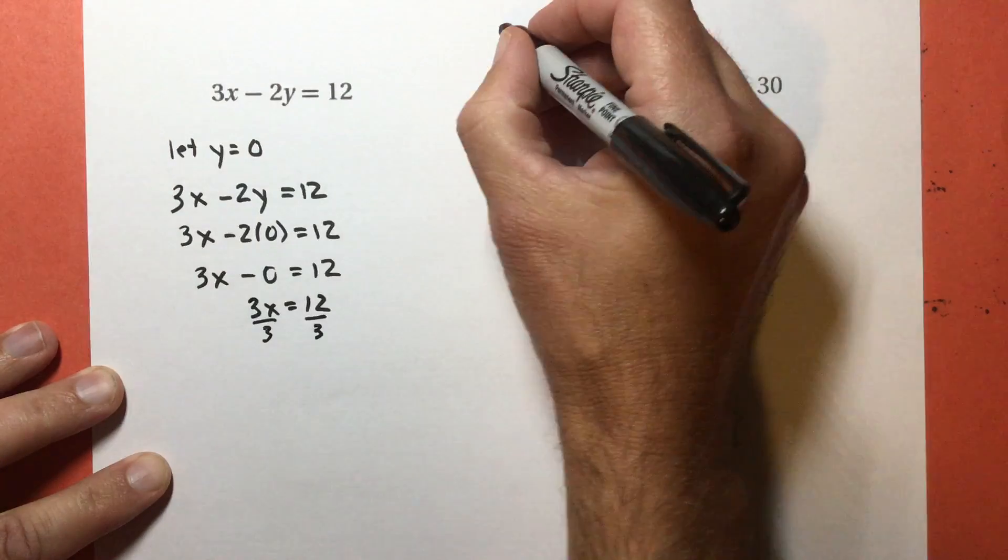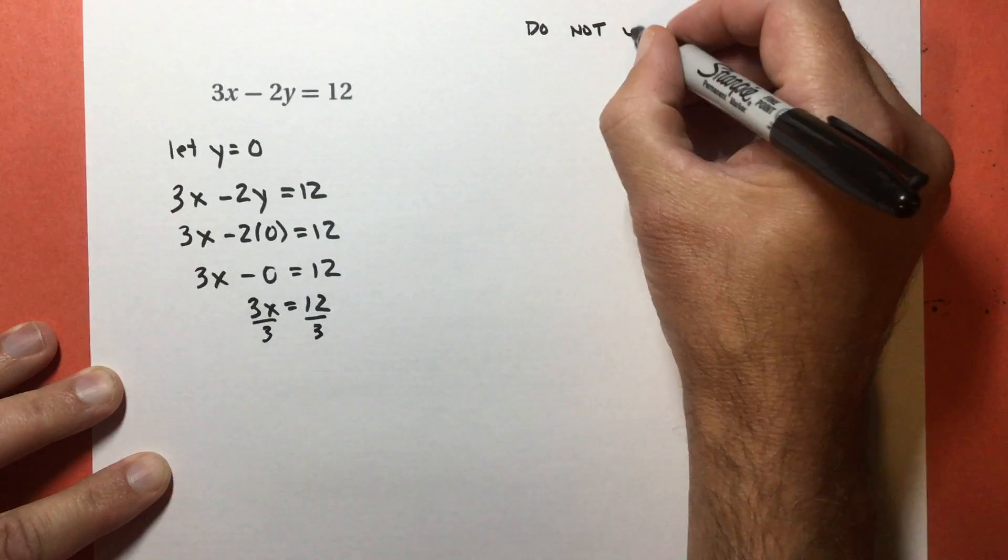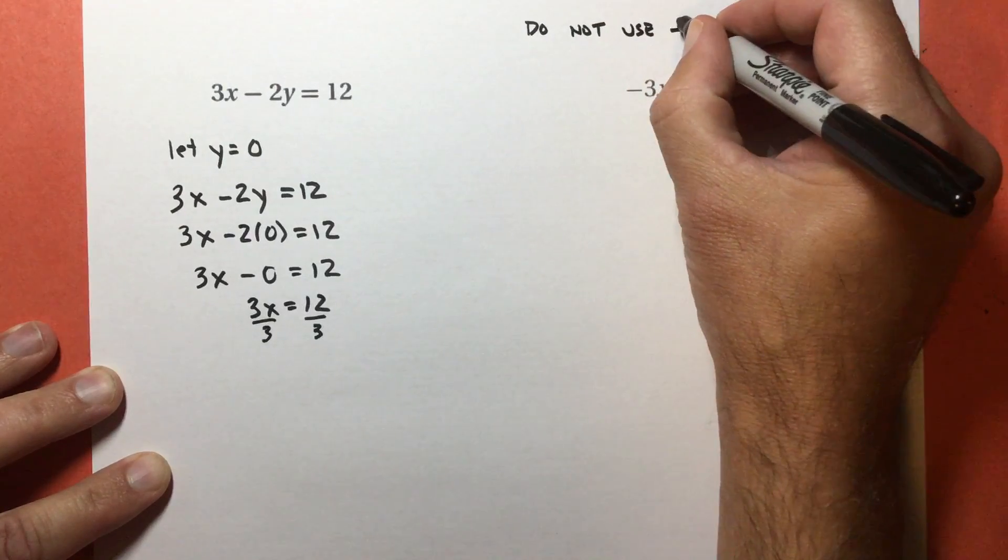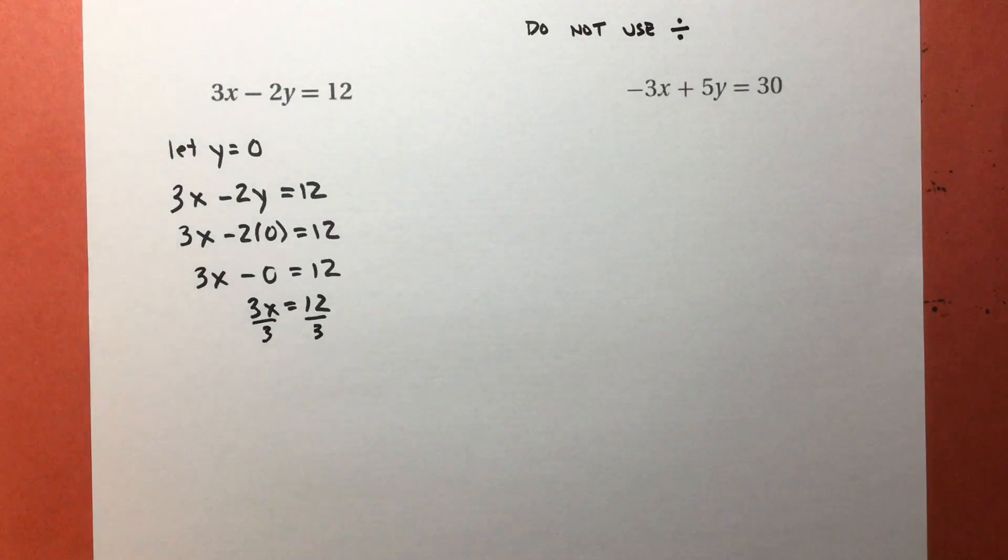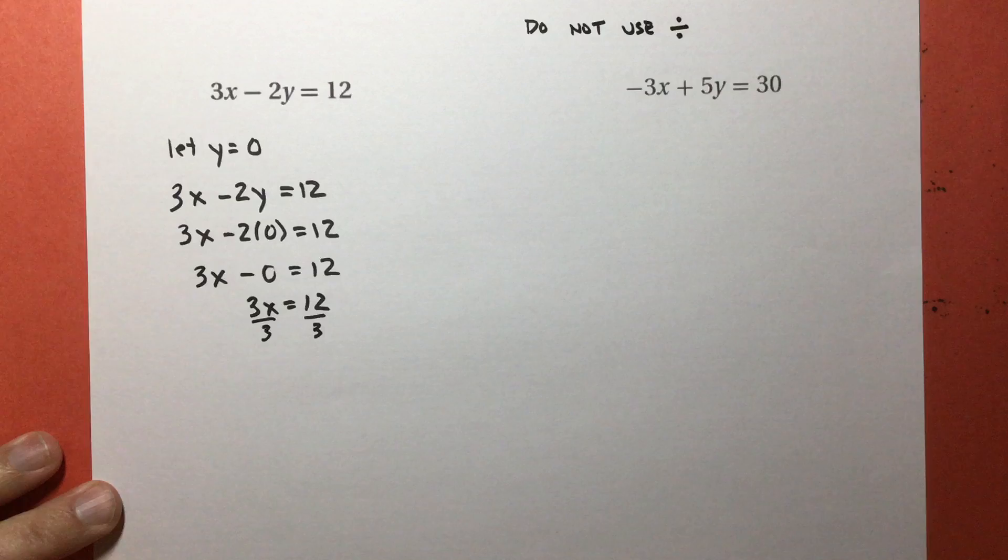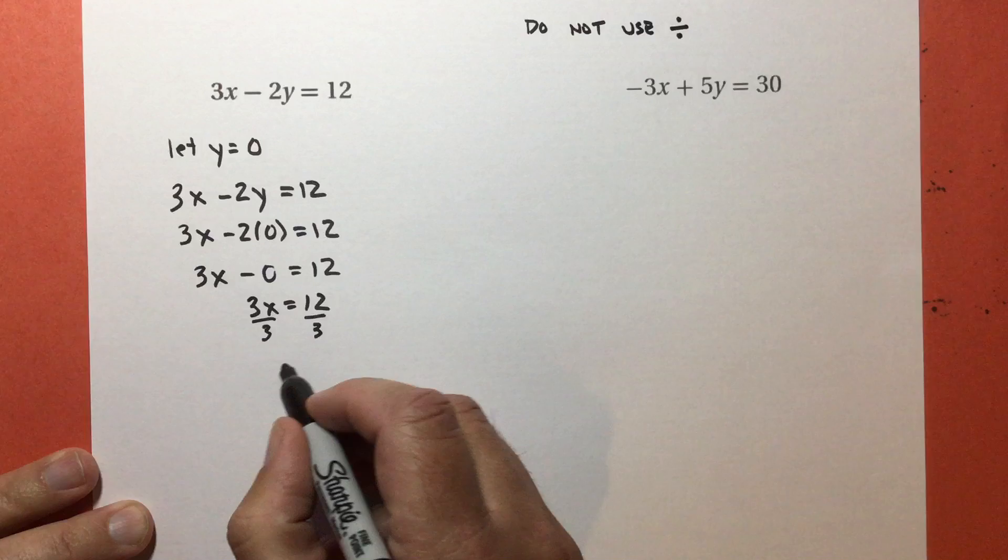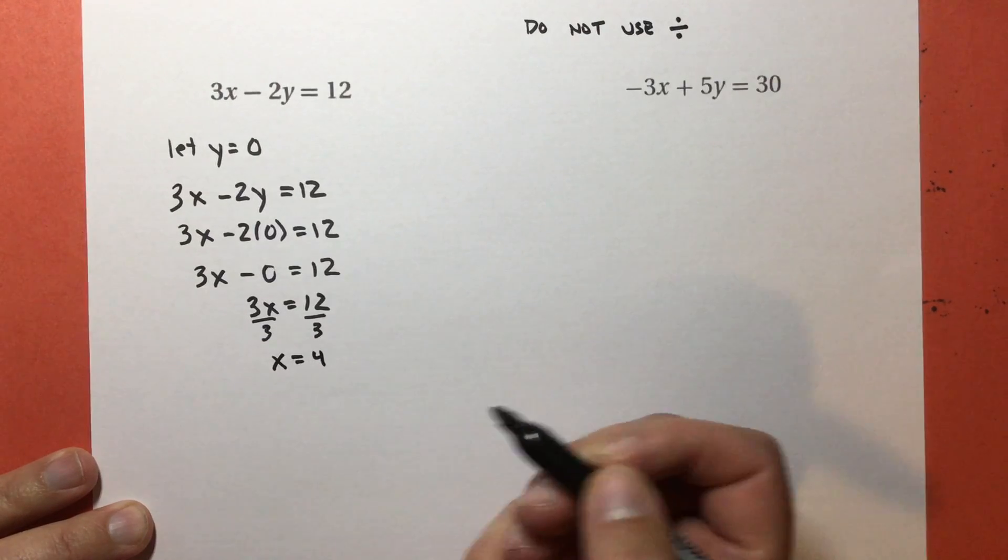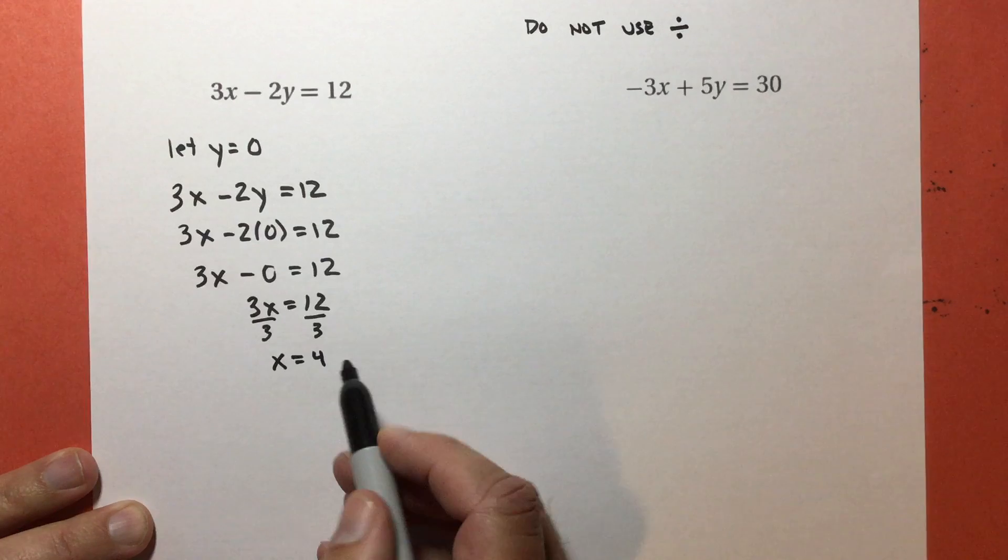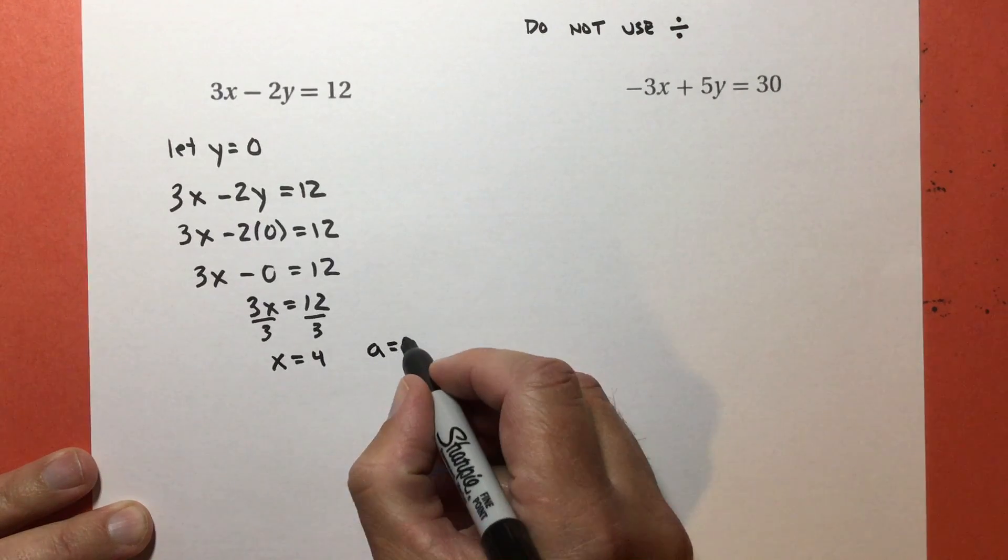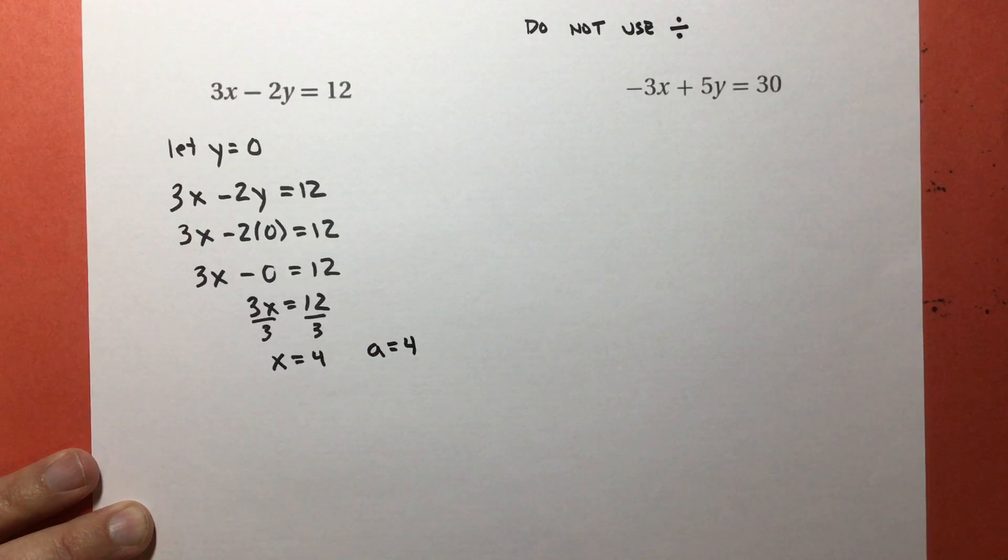I'm going to use a fraction like that. Do not use this symbol right here. I know you've seen that before, but in advanced math, we want to avoid that. There's only one place where I kind of need to use it, and it's in algebra 2. Right now, we're going to use fractions instead. 12 divided by 3 equals 4, so I get x equals 4. That is my x-intercept. So now I know that my x-intercept is 4.